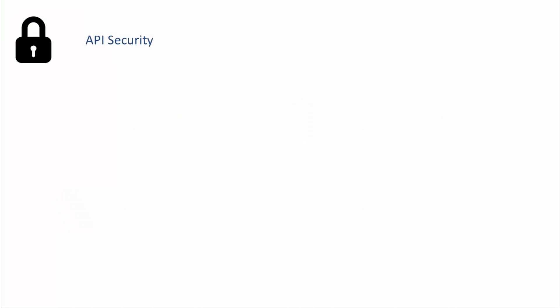For API security, in the case of a private or internal API, the API consumers are known and are app developers who can be trusted. So you don't need a very strict form of security — you can use basic auth or some token-based proprietary scheme. This is a very common practice adopted by many organizations.